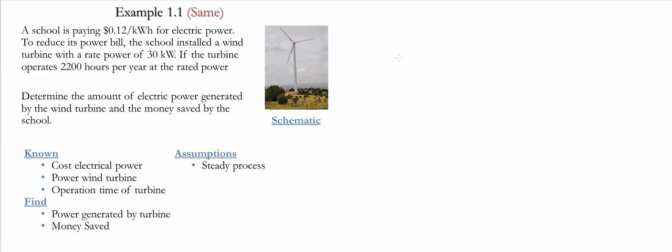The first step is to calculate the amount of electrical power generated by the wind turbine. That is equivalent to the total amount of energy generated by the turbine, and that is going to be equal to the rate power times the time that it runs for. So we simply multiply by time.